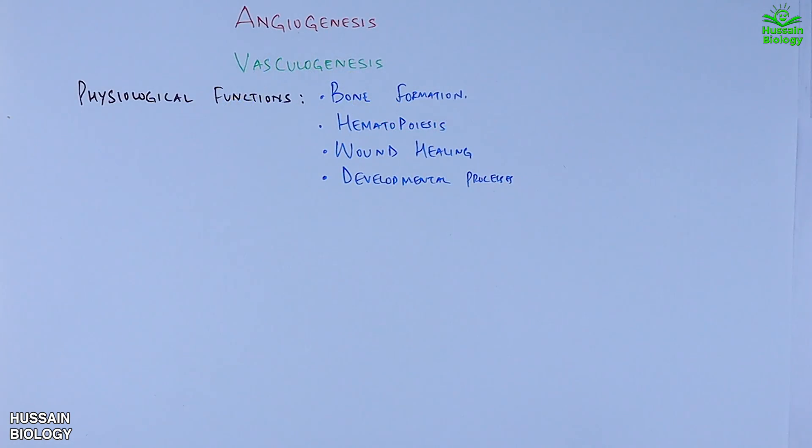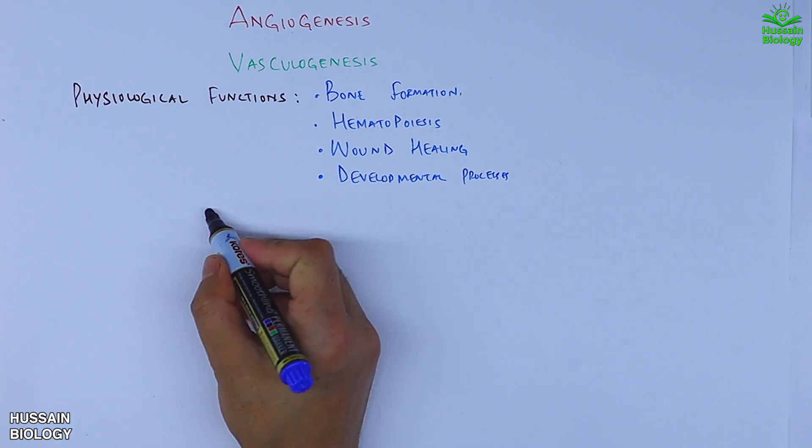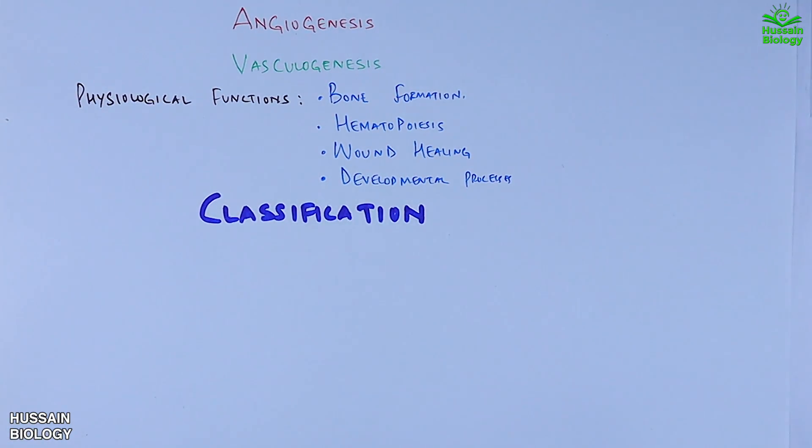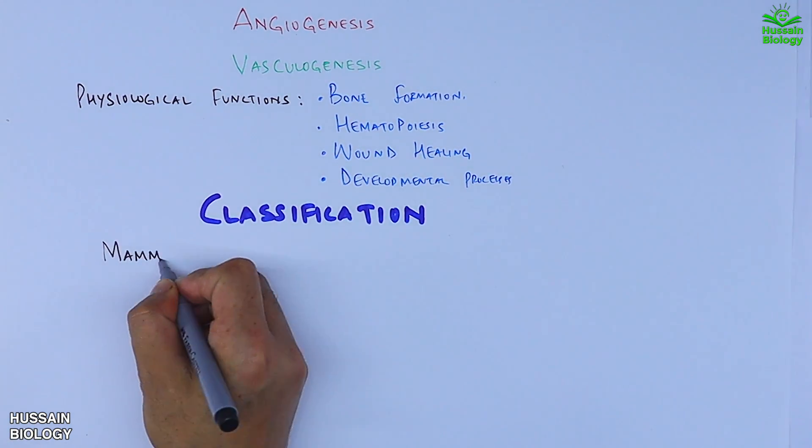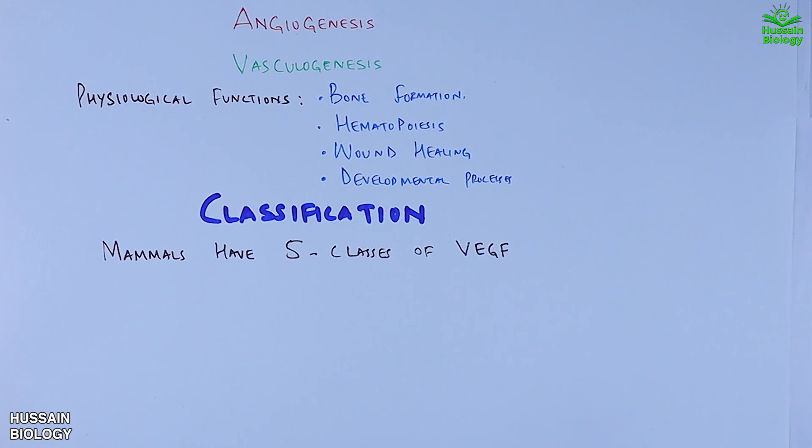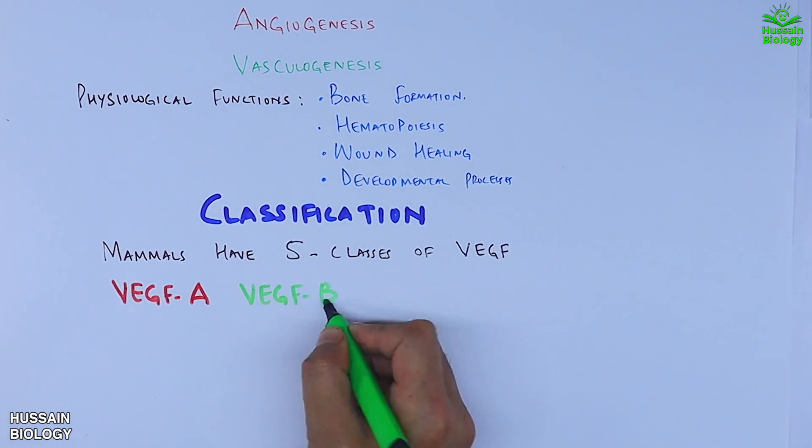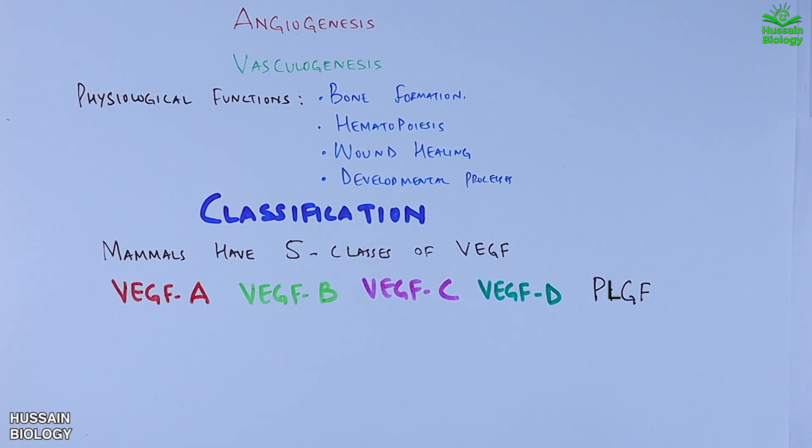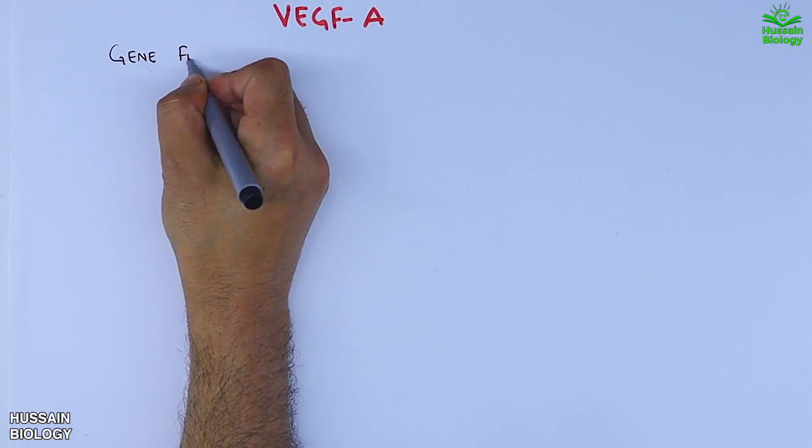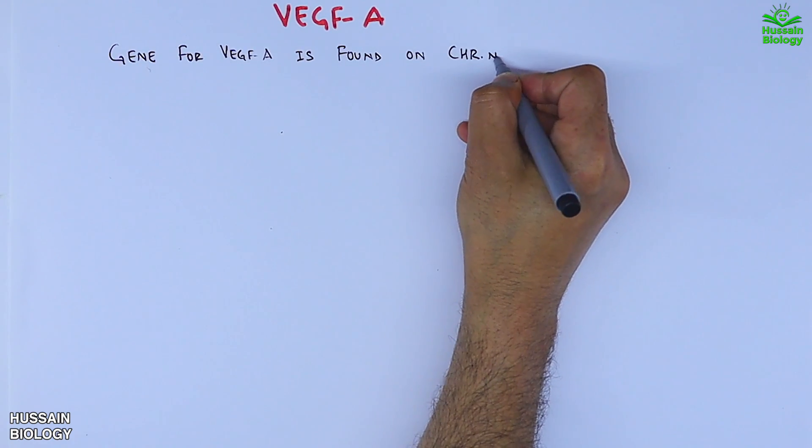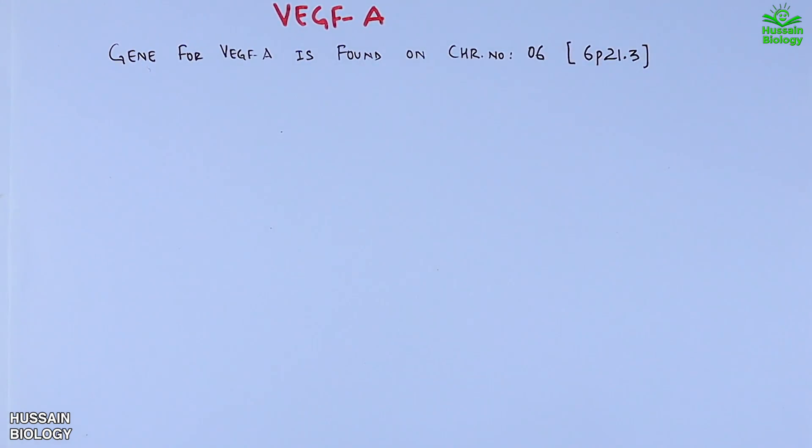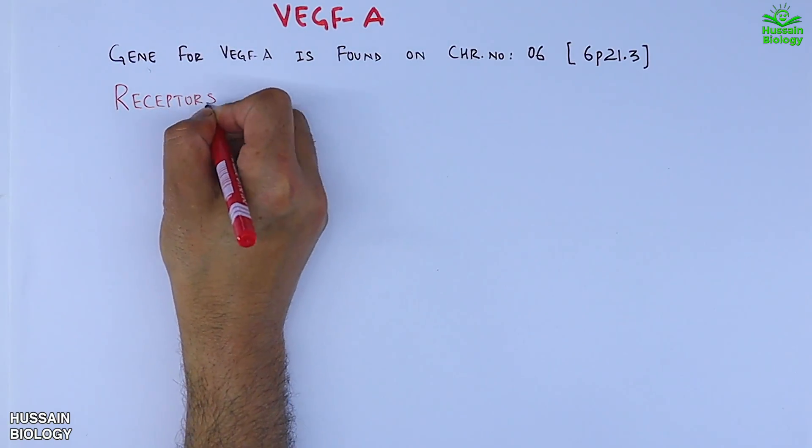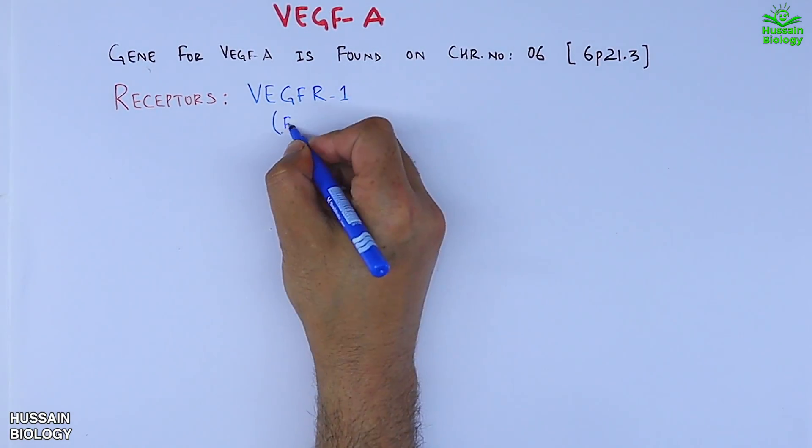First, let's get to the classification of these factors. In mammals we have five classes of VEGF: VEGF-A, VEGF-B, VEGF-C, VEGF-D, and PGF. Let's discuss VEGF-A. The gene for VEGF-A is found on chromosome number 6 at 6p21.3 location. The receptors for VEGF-A ligand are VEGFR1 and VEGFR2.